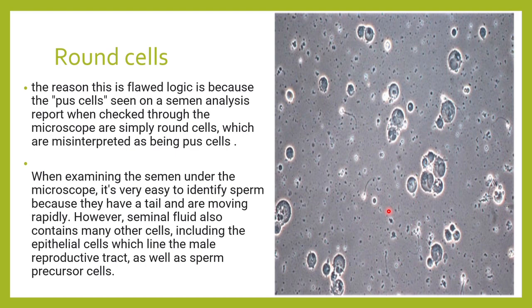Sometimes all these round cells are thought to be pus cells and are misinterpreted as pus cells. When we see under the microscope, we are very much able to identify a spermatozoa by its tail and its head. But there are many other cells in the background — precursor cells, pus cells, germ cells, RBCs — and it is a little difficult to identify those.